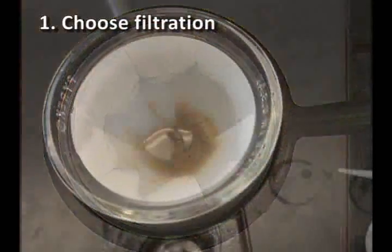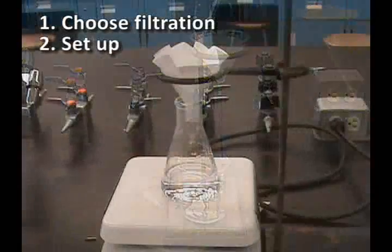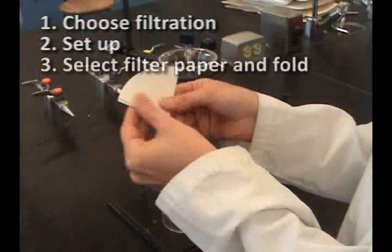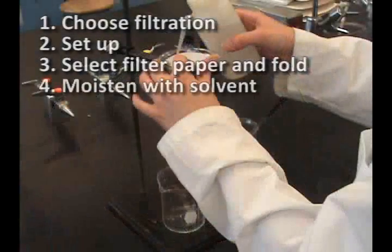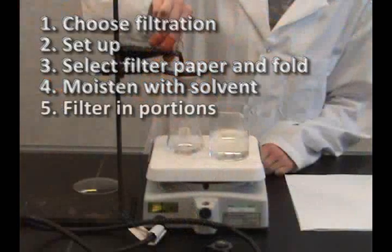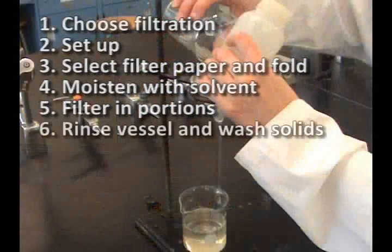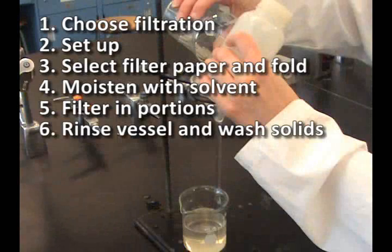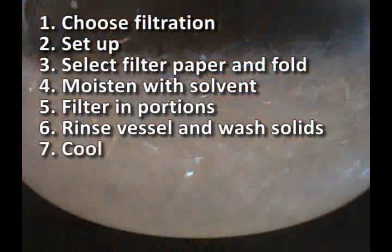Let's review the steps. Choose the type of filtration, either hot or cold. Set up apparatus for chosen filtration. Select the correct filter paper and fold accordingly. Moisten the paper with hot or cold solvent. Filter solution in portions. Rinse the transfer vessel to ensure all solid is filtered and then wash the solids. If hot filtering, allow solution to cool for crystals to form. Now you are ready to filter.